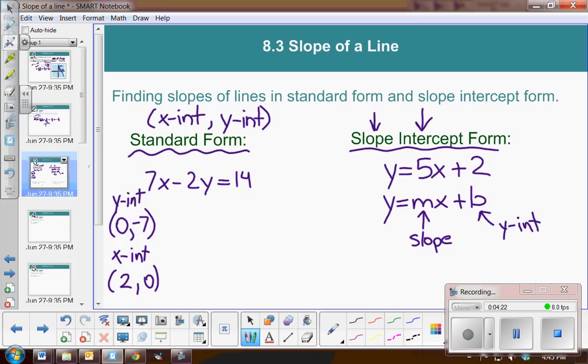So according to this example here, the slope would be 5, and the y-intercept is 0, 2. Make sure you write the y-intercept as an ordered pair.